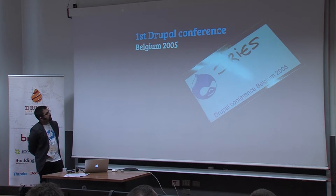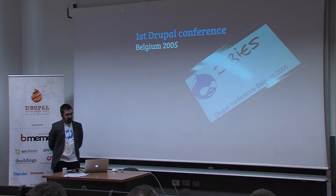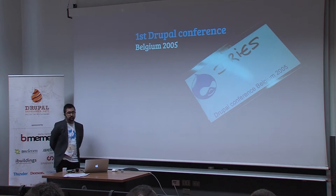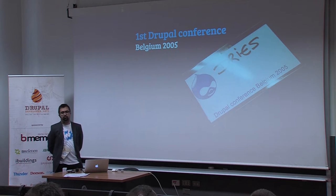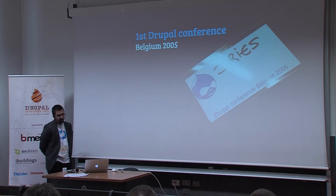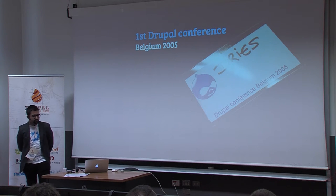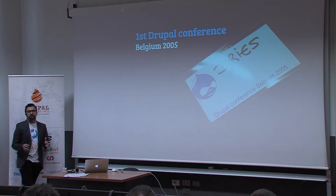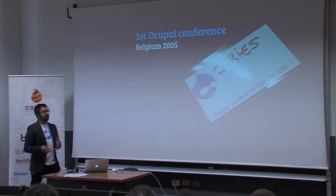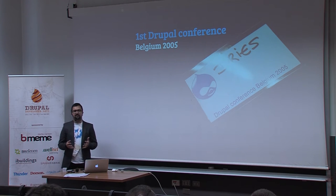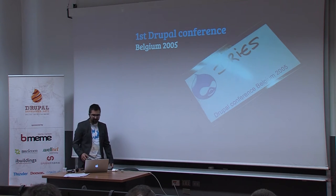On February 2005, Drupalistas gathered in Antwerp, Belgium — now known as the first DrupalCon. At the moment there were only 15 attendees. Because the internet connection was usually not good, people would load the whole contributed repository with all the modules and then work offline at the conference, which is today something impossible with over 30,000 modules.